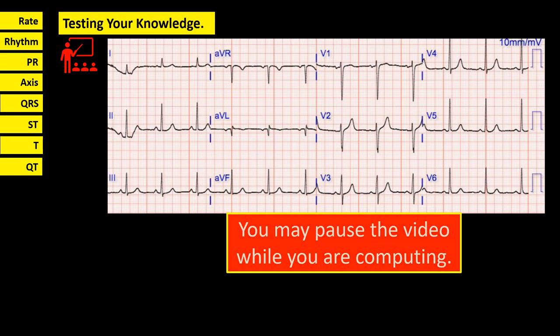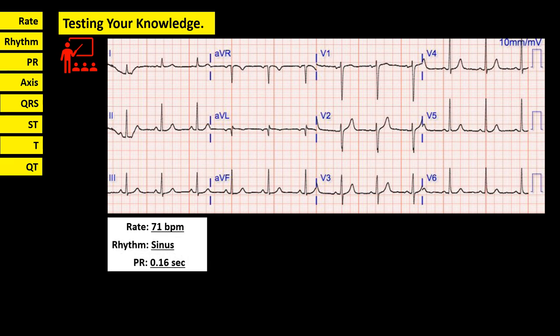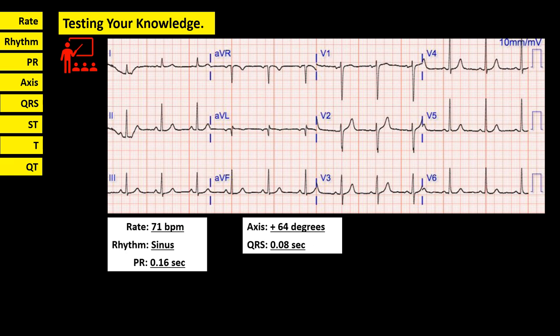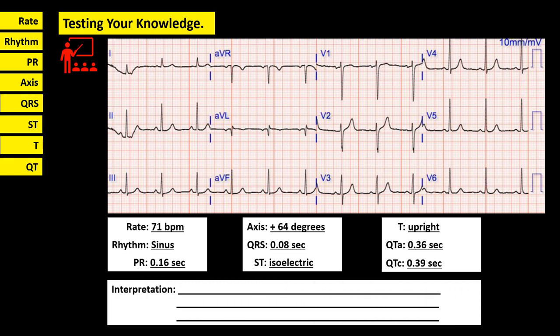We are done with how to determine rate, rhythm, PR interval, axis, QRS complex interval, ST segment, T-wave, and QTA and QTC intervals. Now let us apply what we just learned by answering this sample ECG tracing. The answers are: rate 71 beats per minute, normal; rhythm is sinus, normal; PR interval is 0.16 seconds, normal; axis is positive 64 degrees, normal; QRS complex is 0.08 seconds, normal; ST segment is isoelectric, normal; T-wave is upright, normal; QTA is 0.36 seconds, normal; and QTc is 0.39 seconds, normal. So the interpretation is normal sinus rhythm.